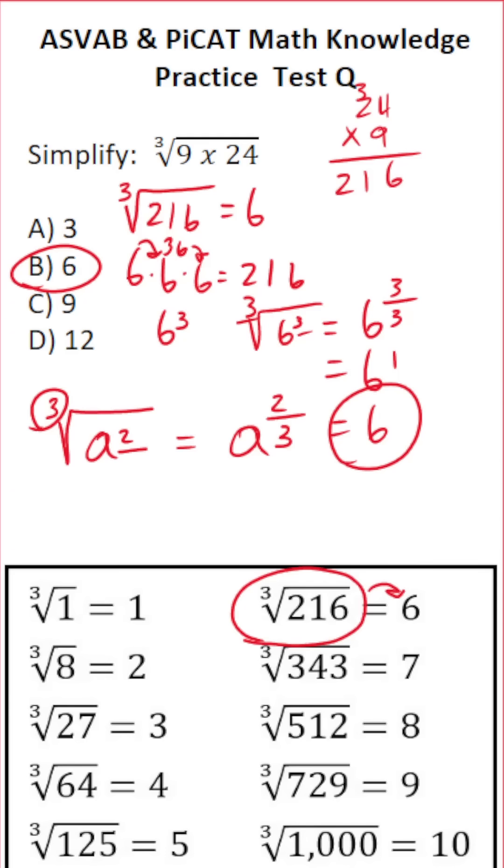Again, you don't have to know all this part right here for the ASVAB as long as you commit these common cube roots to memory.